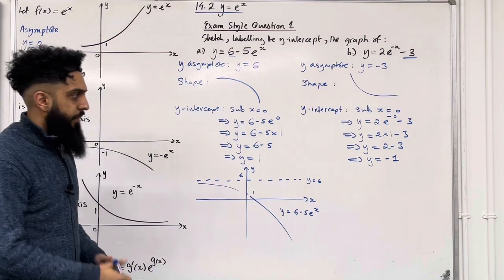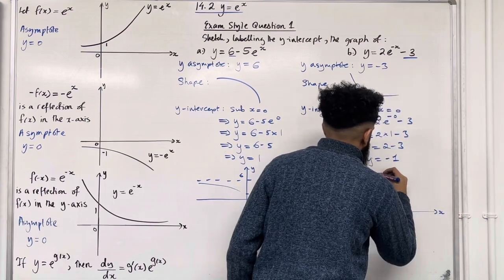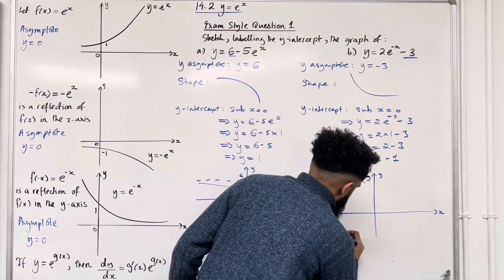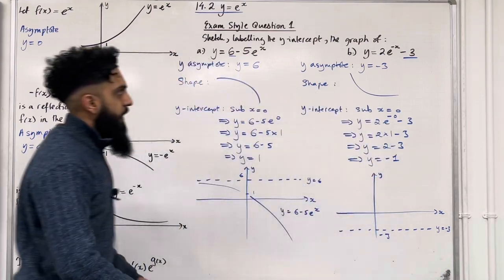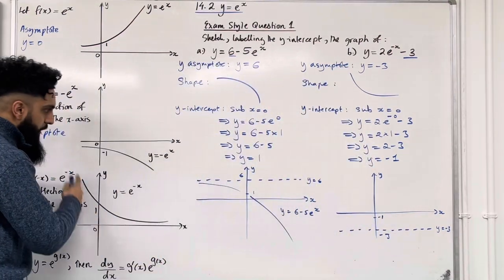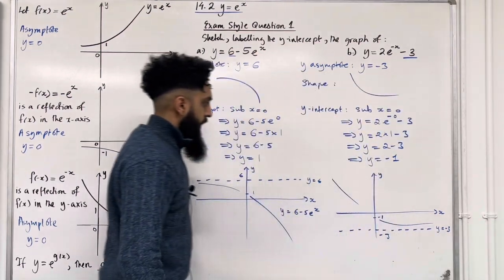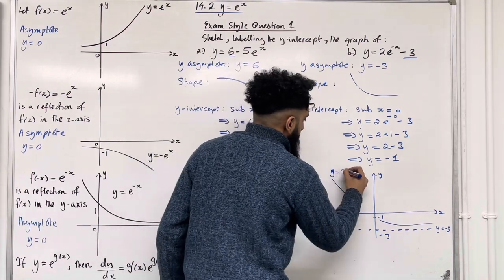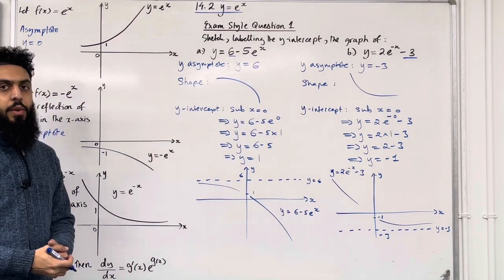Now we're going to sketch the graph. The y-asymptote is y equal minus 3, and the y-intercept is minus 1. The graph looks something like this. I can label the graph as y equal 2 e to the power minus x minus 3. And that, ladies and gents, completes exam style question 1.